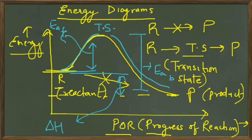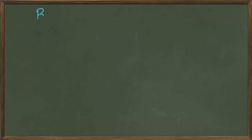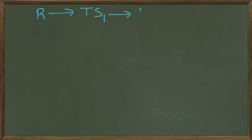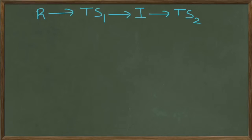A reactant always climbs up a hill and then comes down to form the product. Now it can also happen that a reactant forms more than one transition state — it first changes to transition state 1, which then changes to a somewhat stable species called an intermediate I. This intermediate once again changes to another transition state T.S.2, which then forms the product.